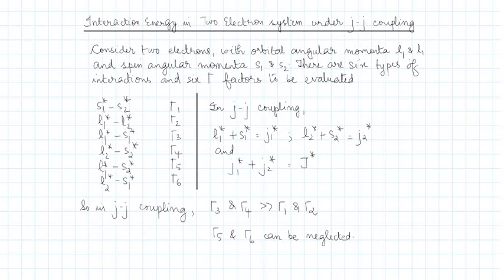If we imagine the possible interactions between l and s of these two electrons, there can be six different types of interactions, and thereby six gamma factors to be evaluated. We have listed out the six possible interactions and their respective gamma factors.